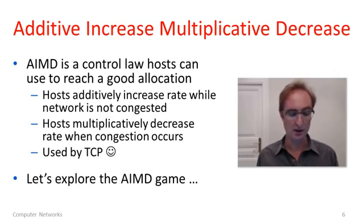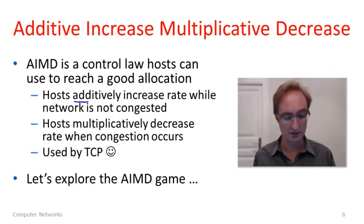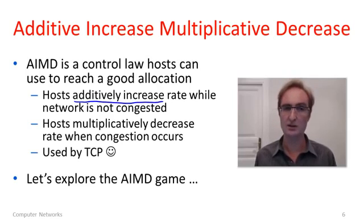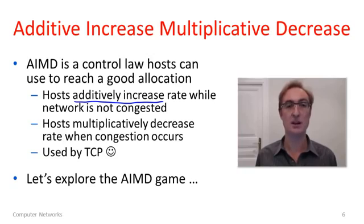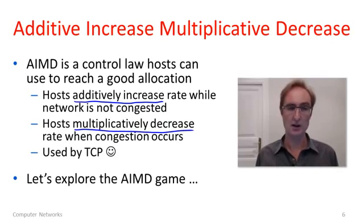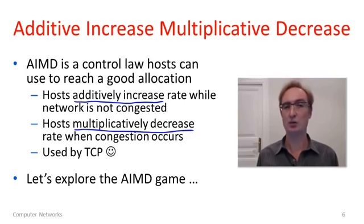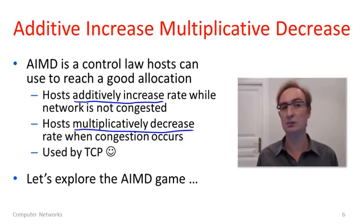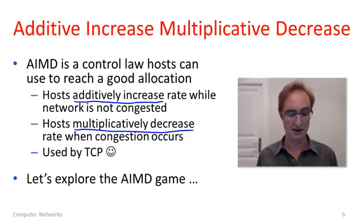In AIMD, hosts additively increase the rate by adjusting the window size — adding something to it — while the network is not congested. That's the AI part. Then hosts multiplicatively decrease the rate by reducing the sliding window when the network enters a congested state. This algorithm repeats: additively increasing until you run into congestion, then multiplicatively decreasing to get away from it, on and on. And that's AIMD.